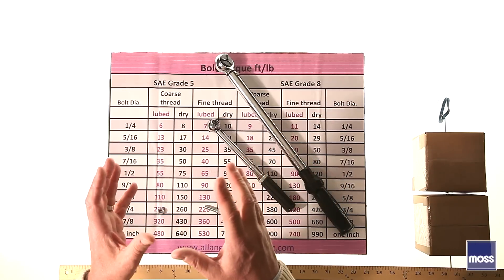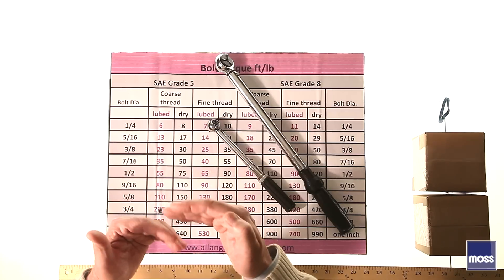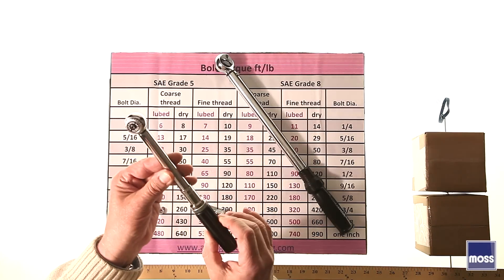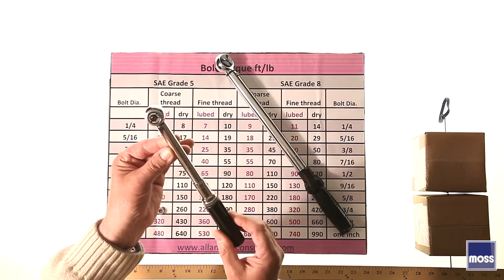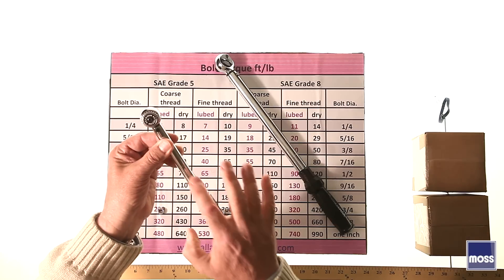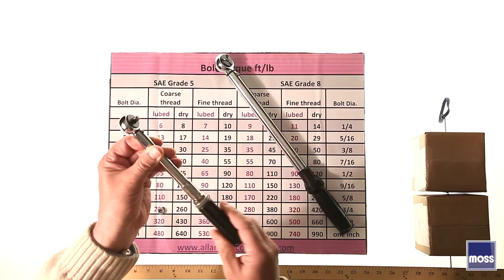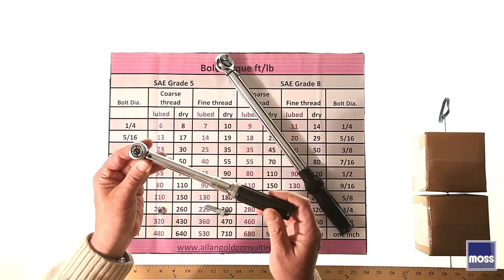Sometimes you may see torque specifications called out in inch-pounds. Inch-pounds are the same thing, only a very small version of it. This is a smaller torque wrench. On this side, it's called out in inch-pounds, and on the other side, it's in newton meters. This would be for things that are smaller and more delicate.